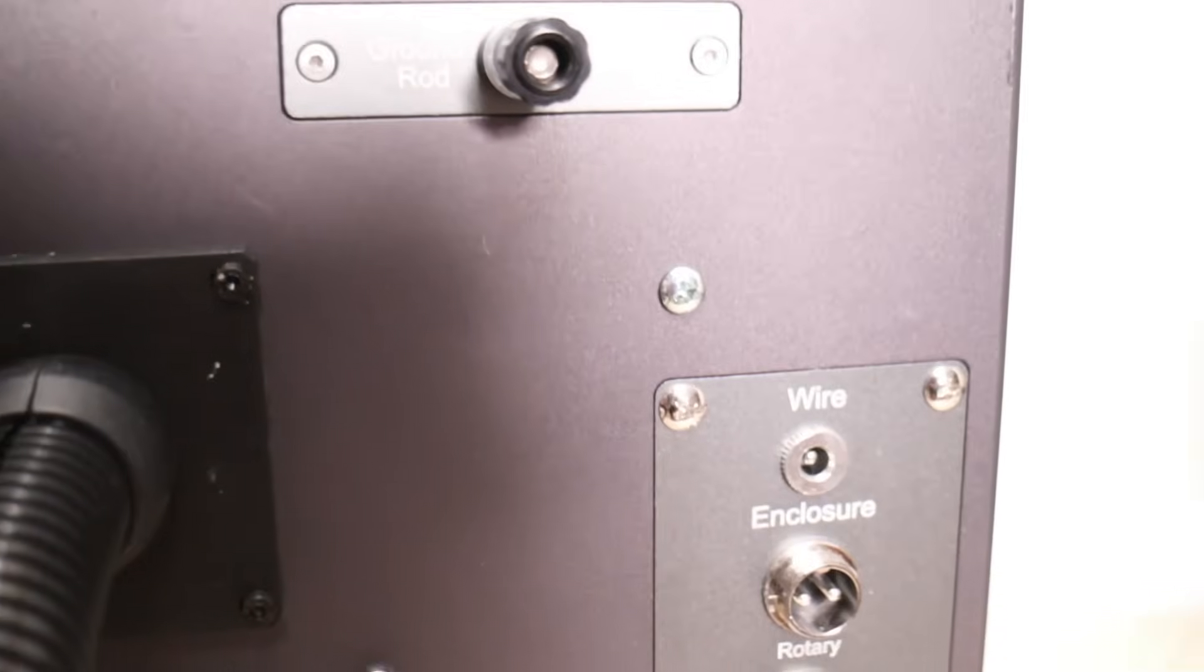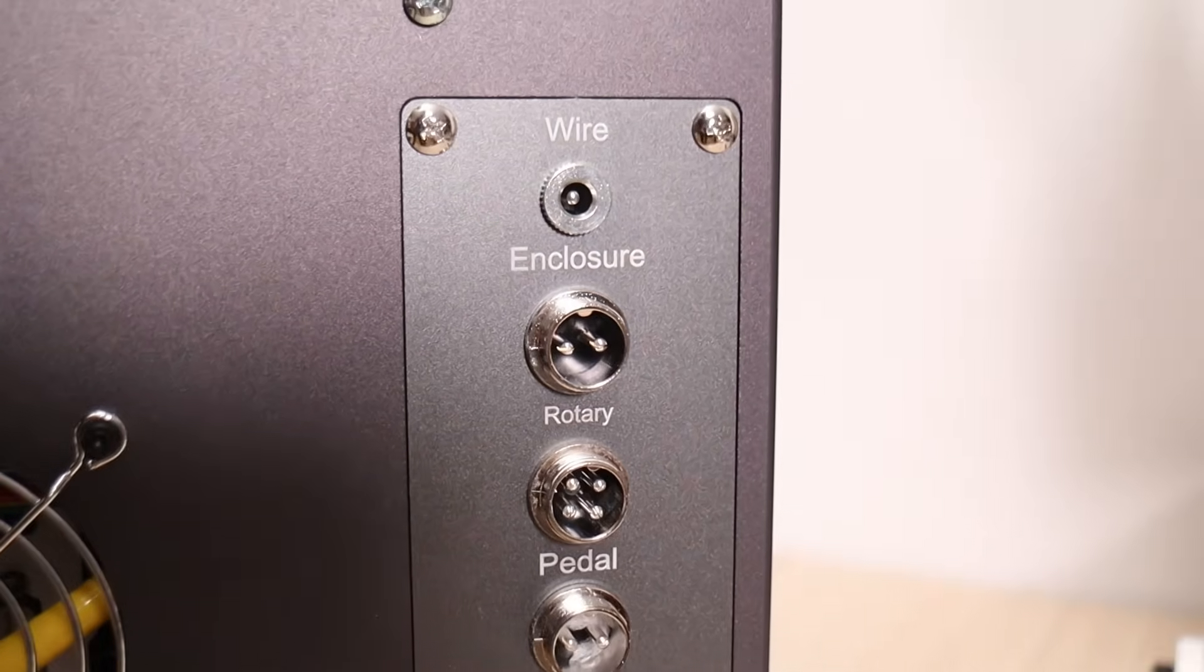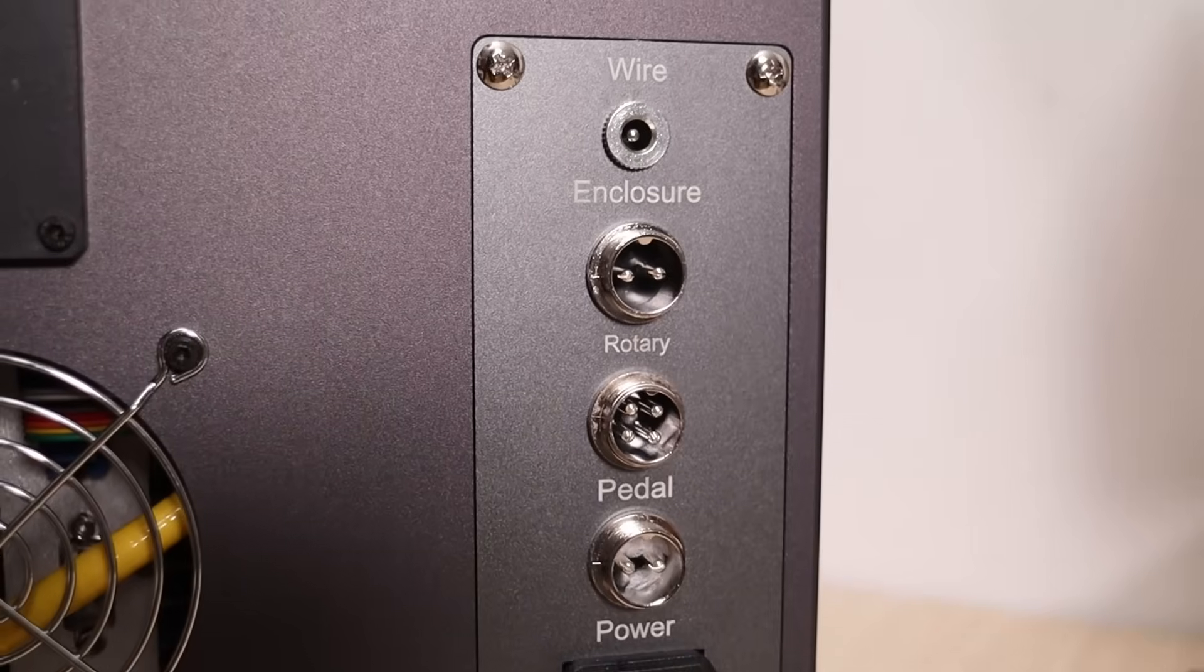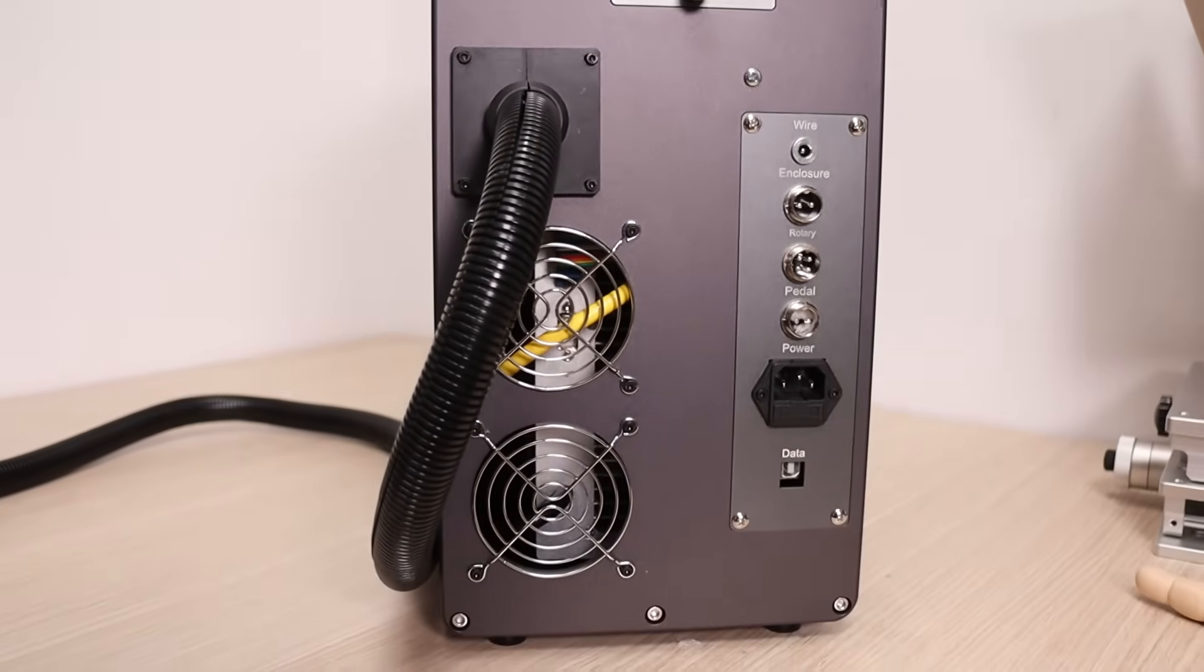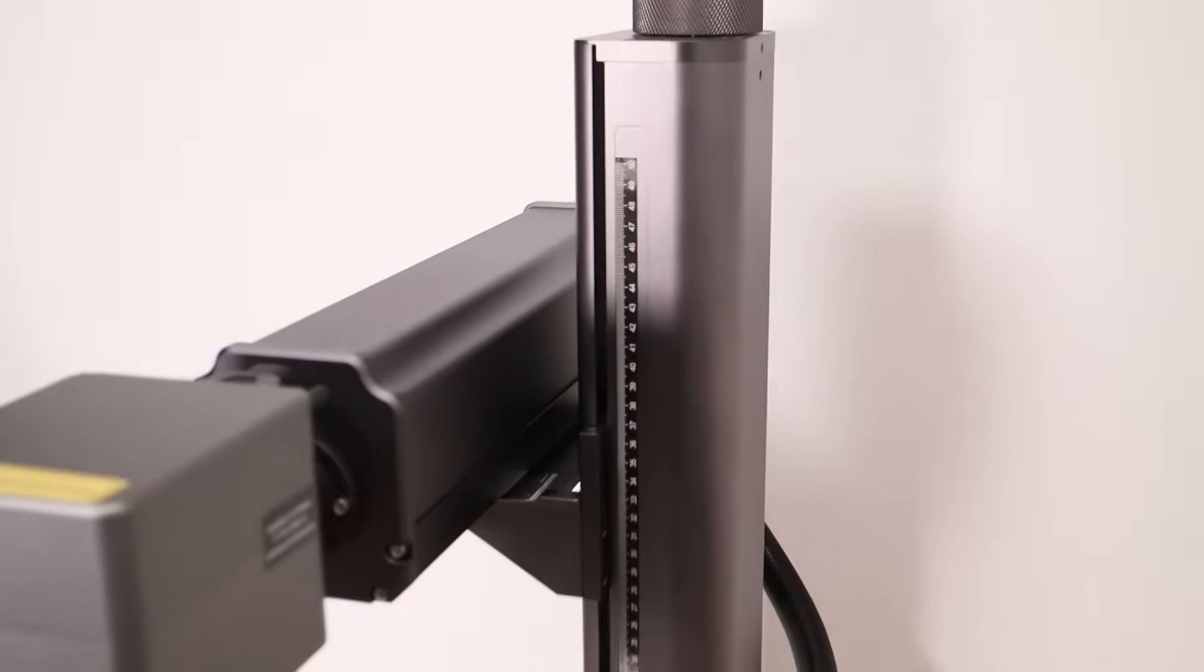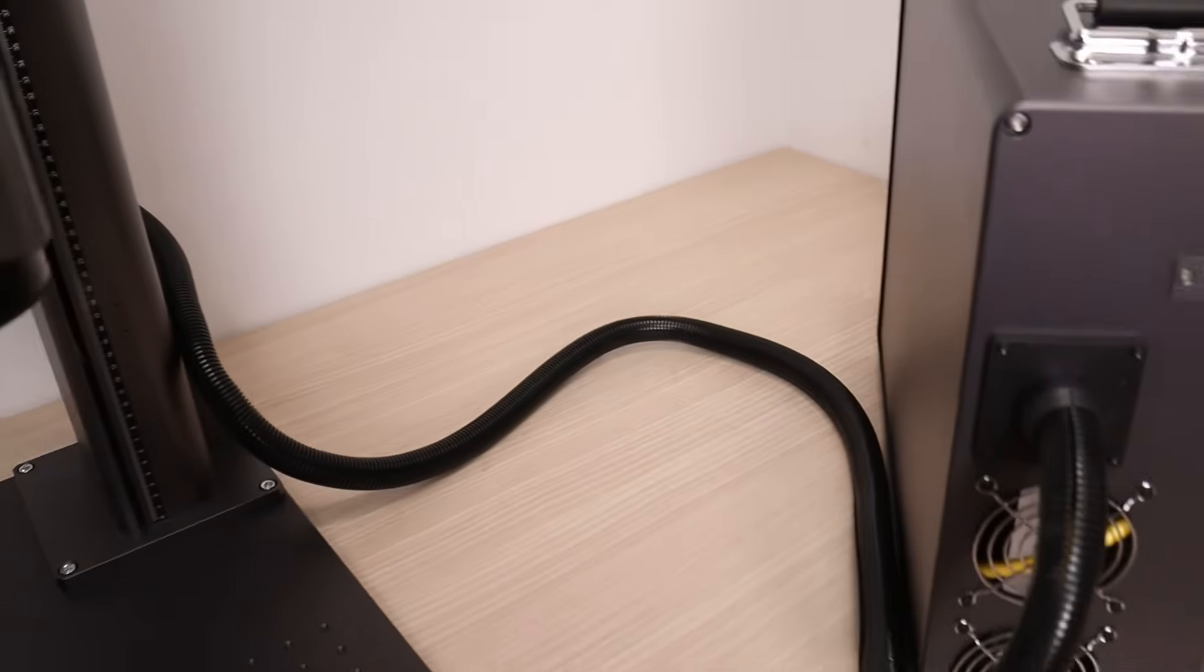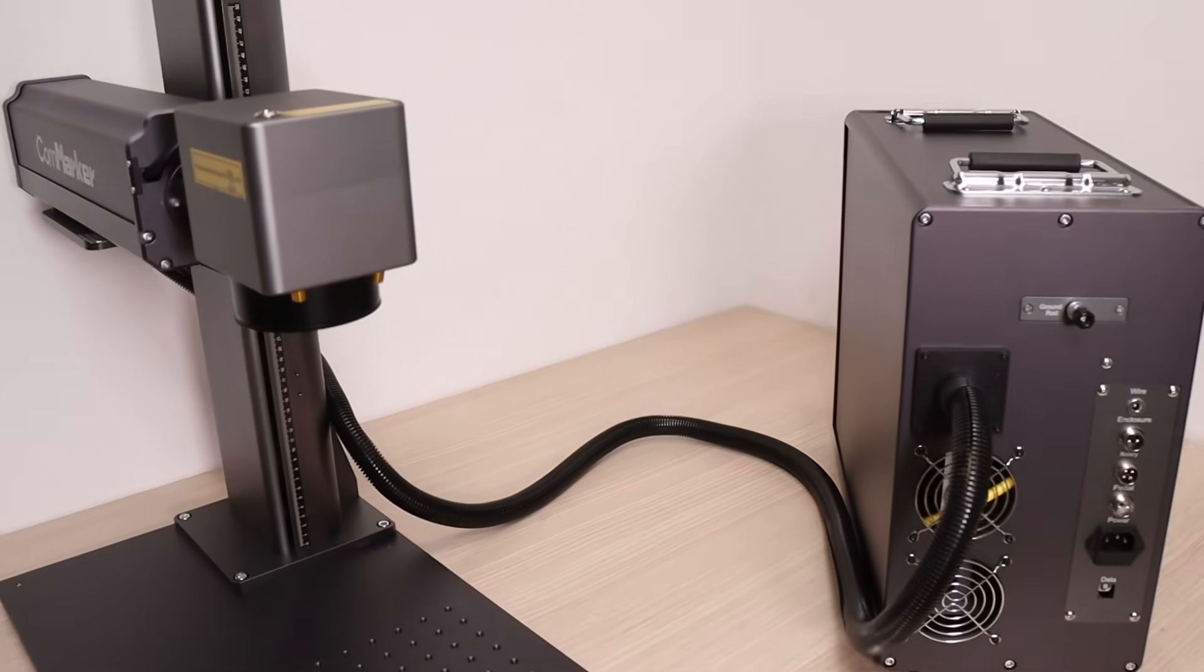On the rear side, you'll find a grounding terminal and connections for the Z-axis motor, enclosure, rotary attachment, foot pedal, power input, and USB data connection. The cable harness connecting the galvo head is quite long, allowing flexibility in positioning the components.